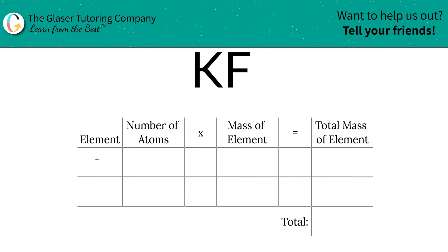So the first thing I do is write down the elements I see. So we have potassium and we have fluorine. Next, to identify the number of atoms, that's where the subscripts come into play. If there are no subscripts down there, it's assumed to be a one. So we have one of each.